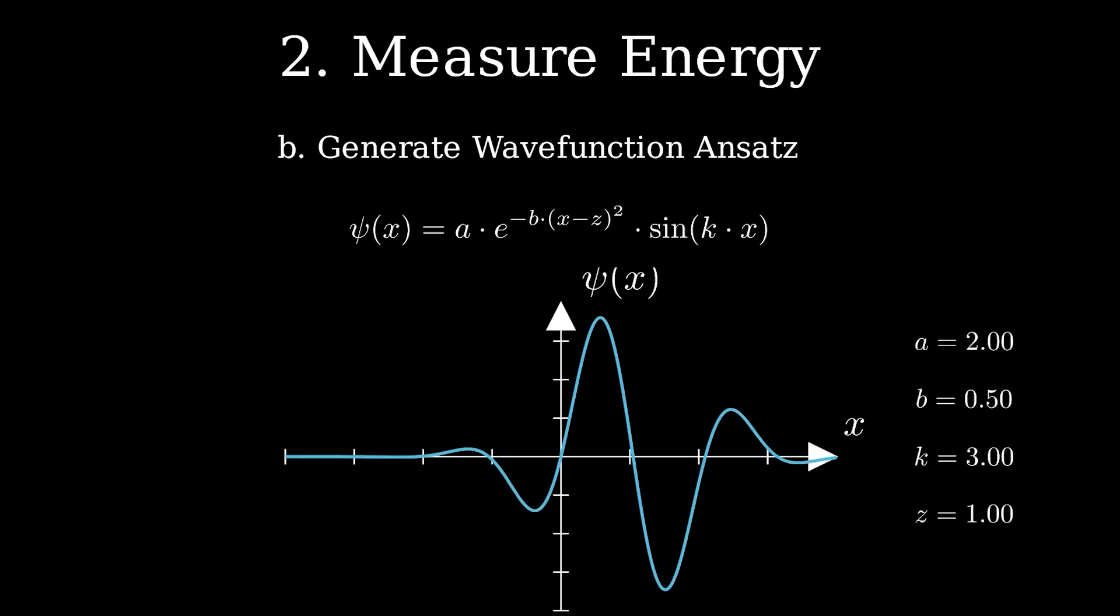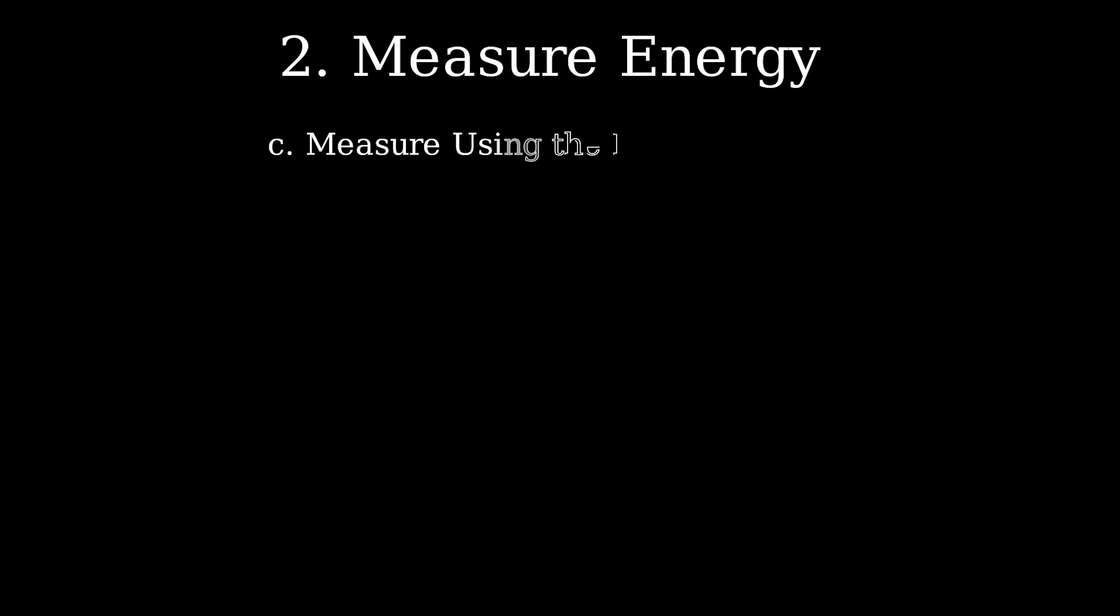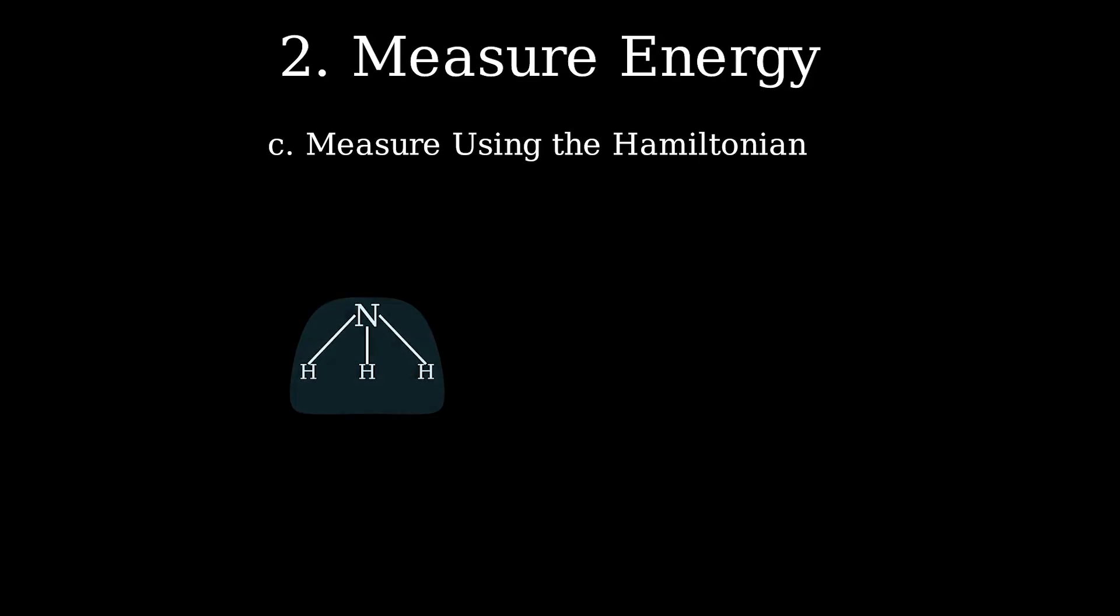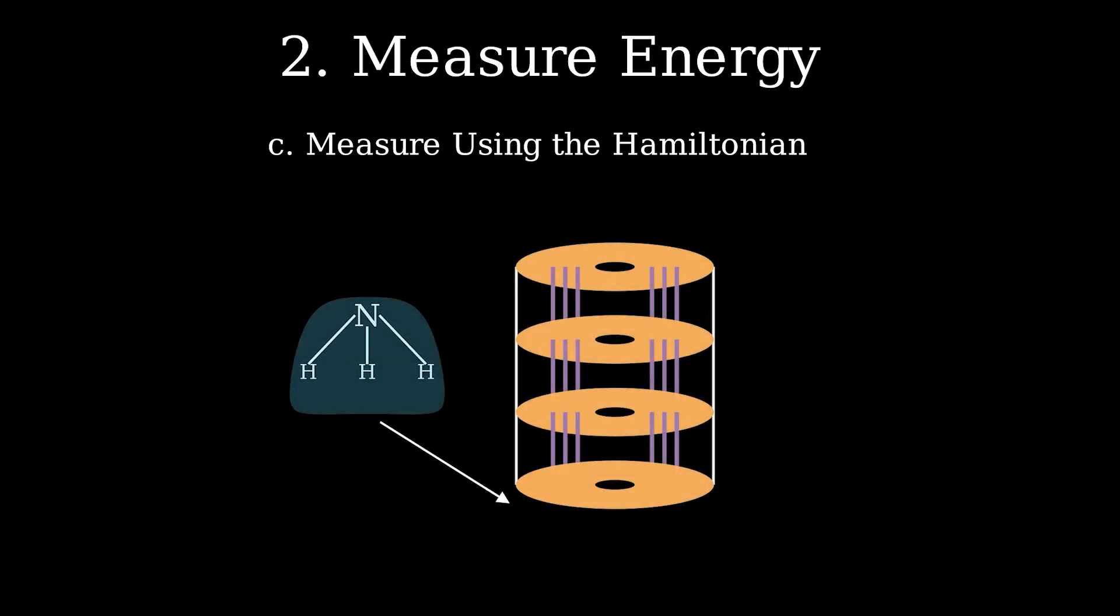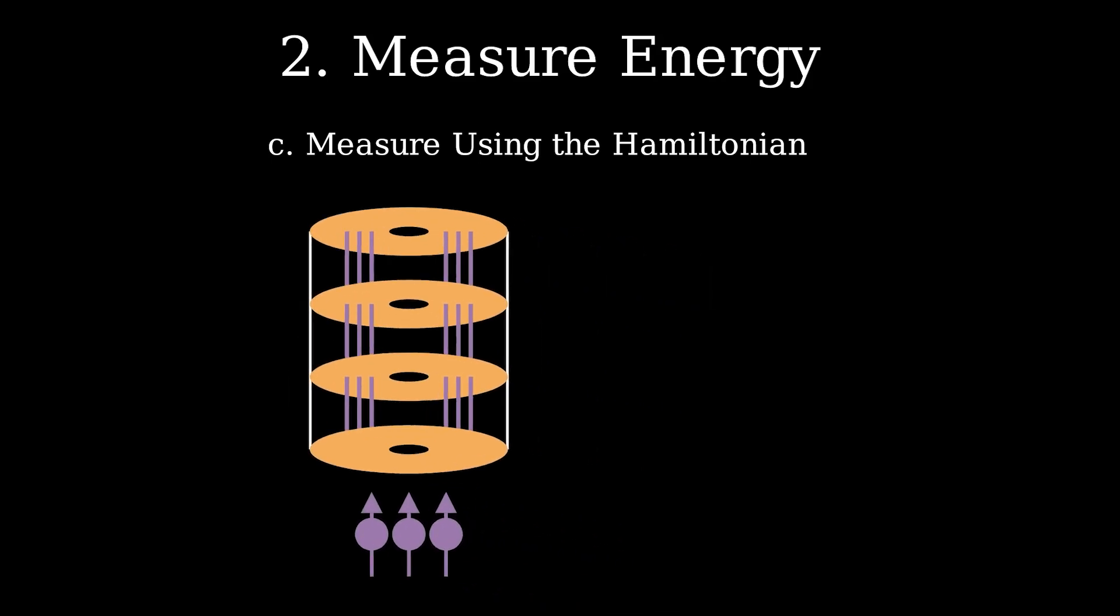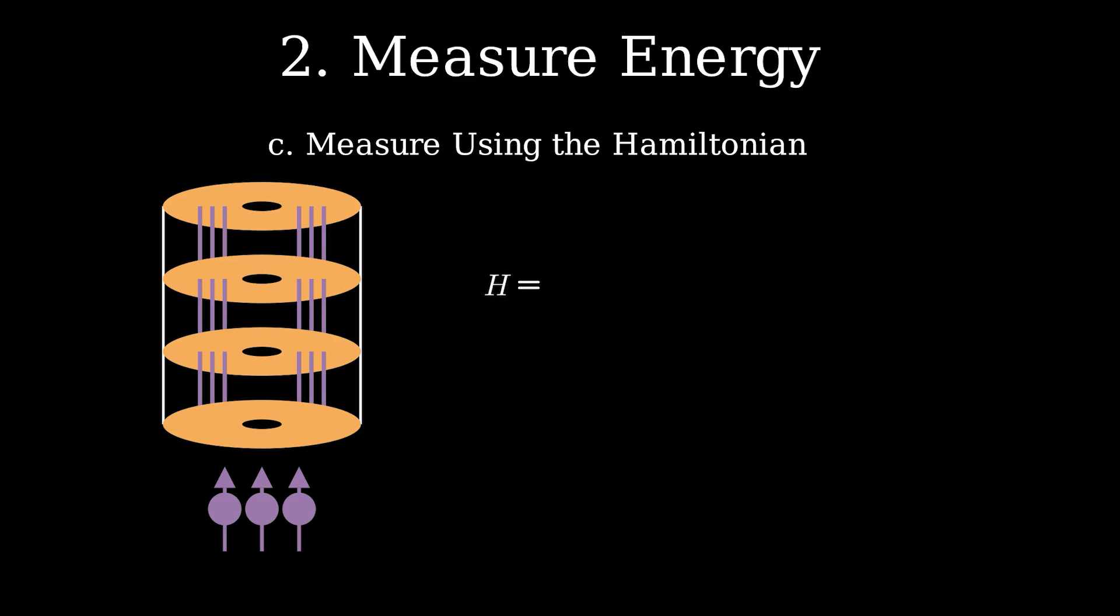Third, we then, on the quantum computer, measure the energy of the ansatz wave function using the decomposed Hamiltonian. We do this in two steps. First, we prepare our qubits in the state of our initial guess, the ansatz. We then use the string of Pauli operators that we got from the initial step to direct our measurements. Specifically, the type of Pauli matrix tells us which axis to measure the state of our qubit along. Doing this for the full Pauli string gives us the energy of our molecule.